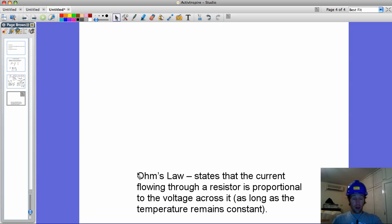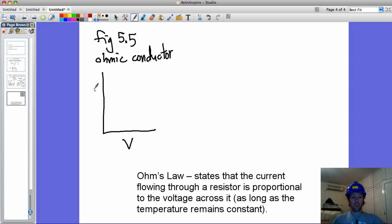And we're going to make some graphs as well. I'm going to call this figure 5.5. And so let's make a graph for an Ohmic conductor. And let's say that we have voltage on the X and current here. If it's proportional, it starts at the origin, and it's a straight line because they are proportional.